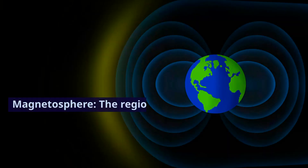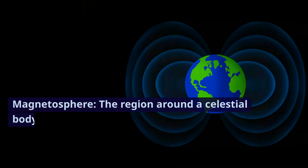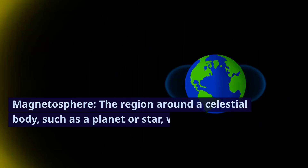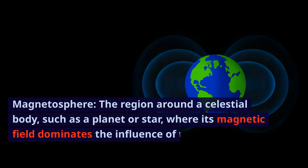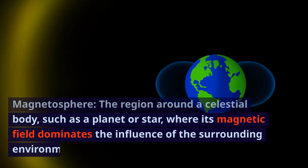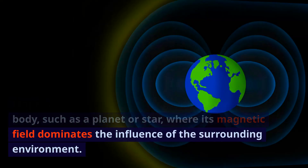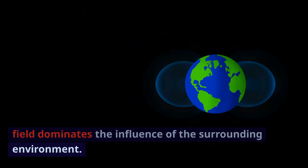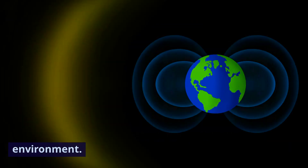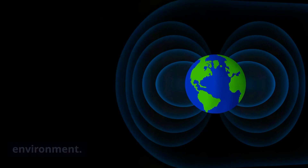Magnetosphere: the region around a celestial body, such as a planet or star, where its magnetic field dominates the influence of the surrounding environment.